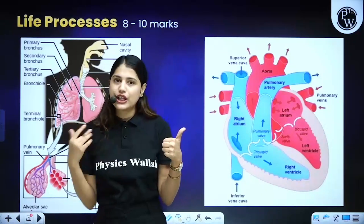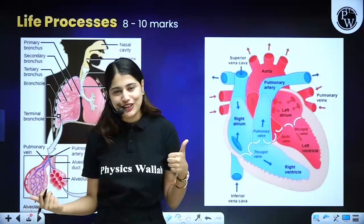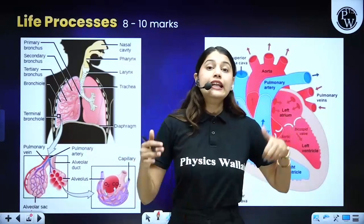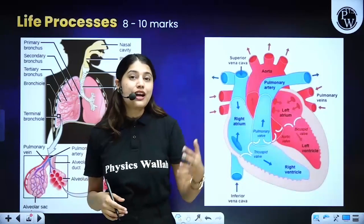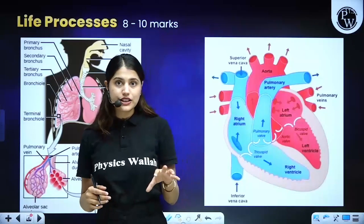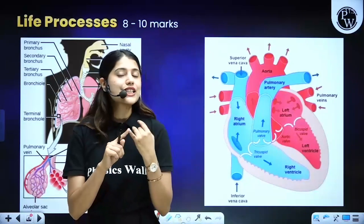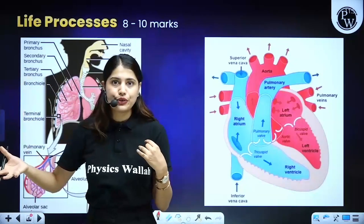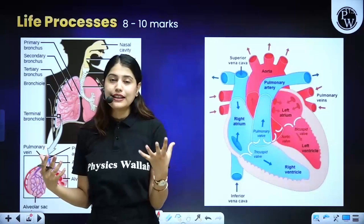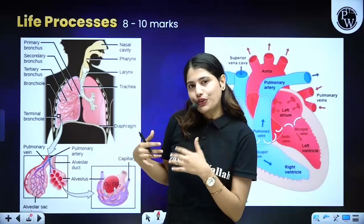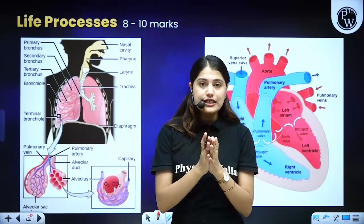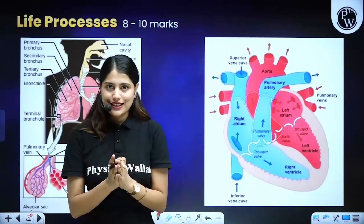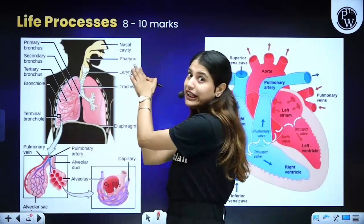The very first important topic is the difference between autotrophic and heterotrophic nutrition. The second topic is photosynthesis. In previous years, many types of questions have come from this topic. They can ask you to define photosynthesis, write down the equation of photosynthesis, or simply write down the events of photosynthesis. So clearly, you cannot miss this topic.